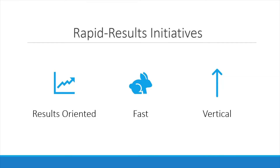Rapid results initiatives are the bread and butter of this article. A rapid results initiative is when a small team of people are tasked with delivering results of a large-scale project on a small portion of the target population. These teams serve as a model for when the initiatives are rolled out on a large scale. The three key components are that they are result-oriented, fast, and vertical, and each of these components go hand in hand to prevent a good project from failing.